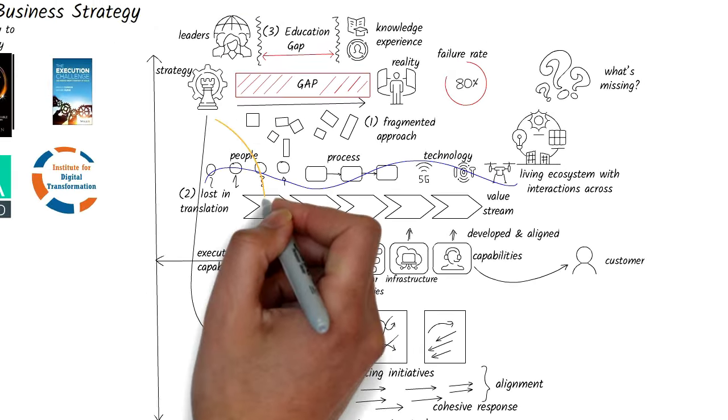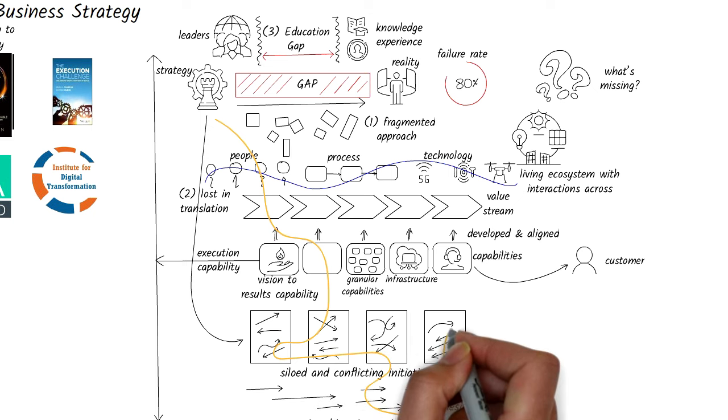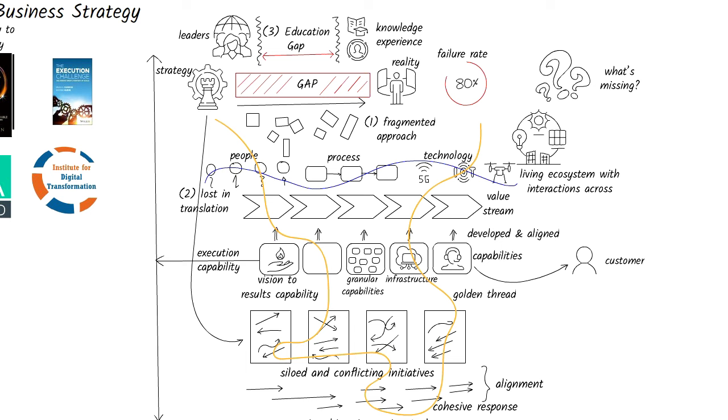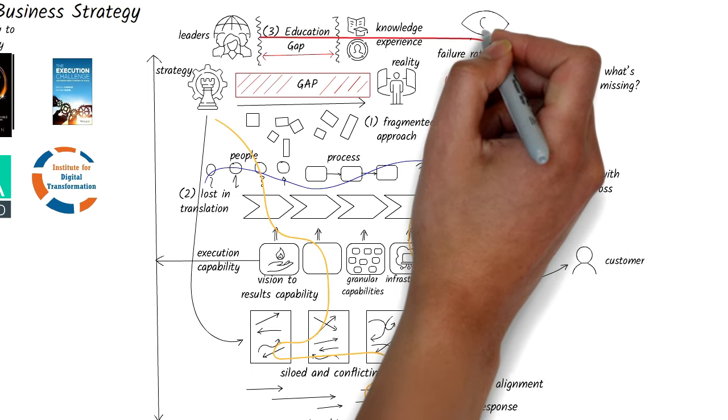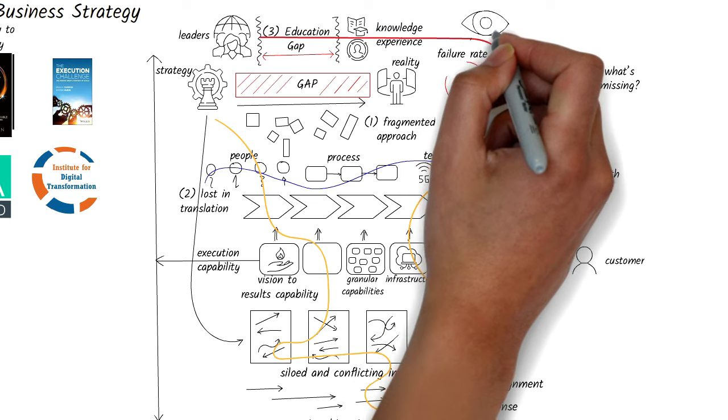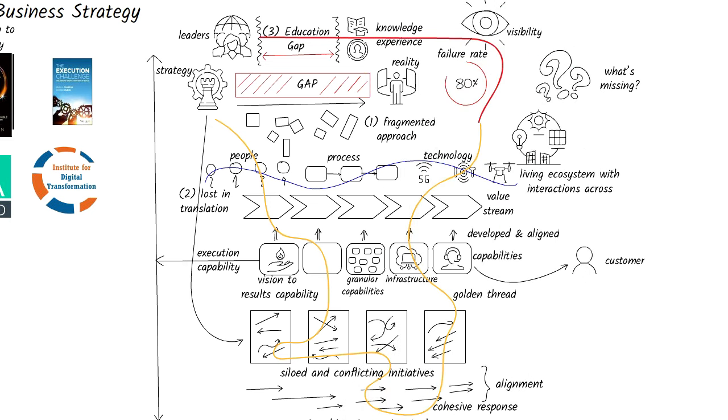Coordination, though, is the golden thread that ties together strategy and execution. This thread begins with the strategy itself, weaves through our capabilities, and connects to each initiative. It ensures that every action we take is purposeful and directly contributes to our overarching goals. In practice, this means developing a clear line of sight from the boardroom to the front lines, ensuring that strategic intent is translated into operational directives without any loss of clarity or purpose.